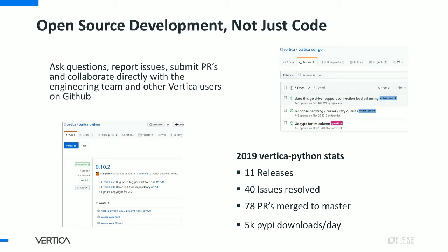It's important to note that for these two projects, we're really doing open source development — we're not just putting code on our GitHub page. If you go out there and look, you can ask questions, report bugs, submit pull requests yourselves, and collaborate directly with our engineering team and other Vertica users. Because it's out on our GitHub page, it allows us to ship and deliver functionality a little bit faster compared to the core Vertica release cycle. In 2019 for example, as we were building features to prepare for the Python 3 migration, we shipped 11 different releases addressing 40 customer-reported issues filed on GitHub, done over 78 different pull requests, with lots of community engagement. Lots of people are already using this — our GitHub badge shows about 5,000 downloads per day.